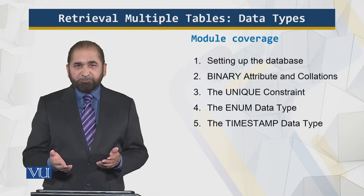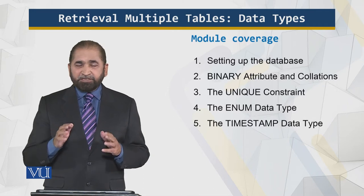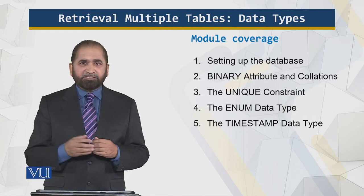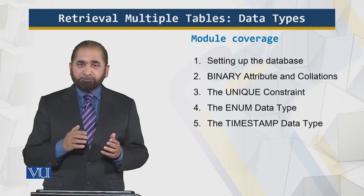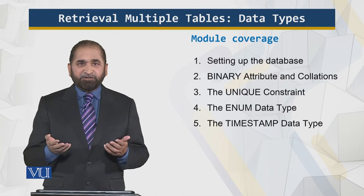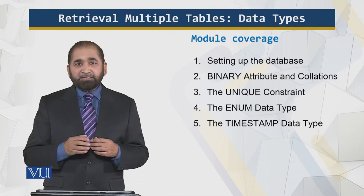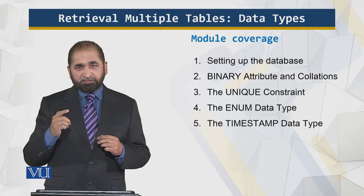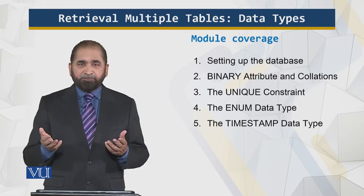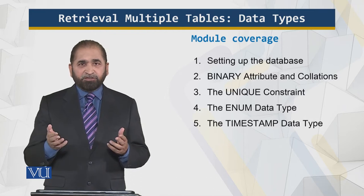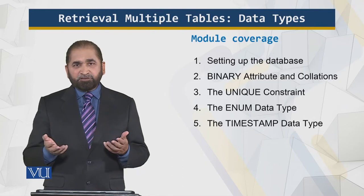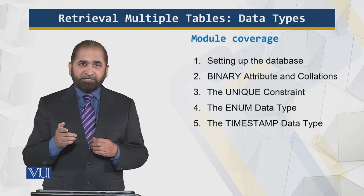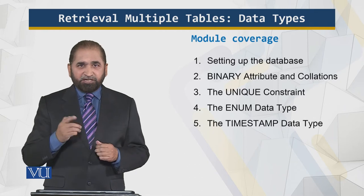Setting up the database and the binary attribute collations. Collations means what will be the precedence of processing a character — for example, A comes before B, but what about capitalization? Then there is the unique constraint, which means non-repeating rows must only appear once in a table. The enum data type defines the values from which a selection can be made, with many benefits. And the timestamp data type automatically records the time and date of the event. So let's go into more details.